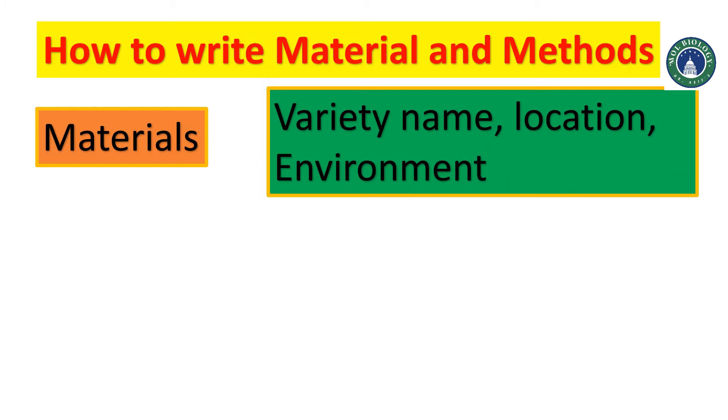We can mention, like if we are talking about an agriculture experiment, we can mention the variety name and we can mention the location where the experiment was done, like if it was any experimental site of any university. You can also mention the environment like the climate and the weather and the temperature if you are doing agronomy experiment. There is usually only one paragraph of material section.